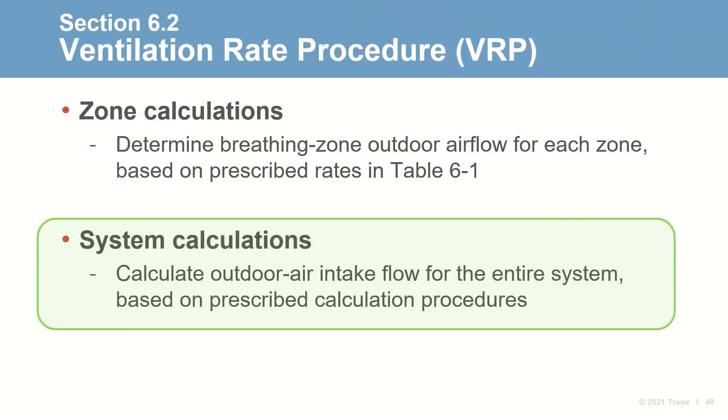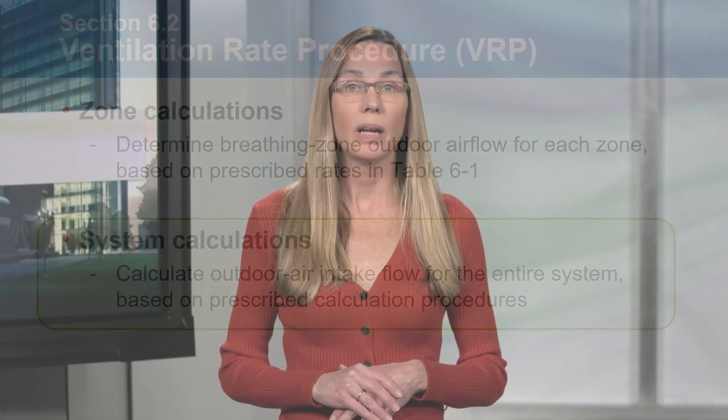That covers the zone level calculations of the ventilation rate procedure. Next, John will explain the system level calculations. This involves calculating the outdoor air flow brought in through the intake for the entire system and builds on zone calculations that Eric just reviewed.